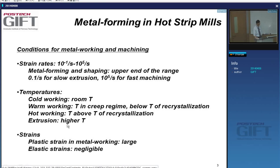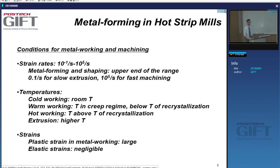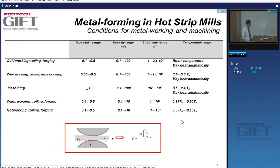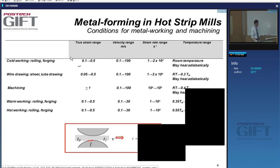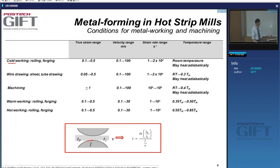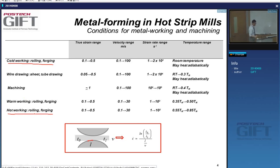Extrusion temperatures can be much higher. Plastic strains in metal working are, of course, very large. Elastic strains are, in comparison, negligible. Cold working such as rolling or forging, and hot working rolling and forging, are done in their respective temperature ranges. The definition of strain rate is given here: when you roll something, you have a starting thickness, an end thickness, a contact area, and a strip velocity.